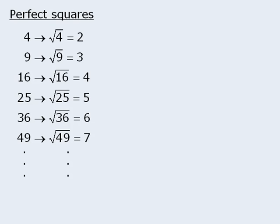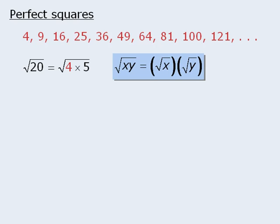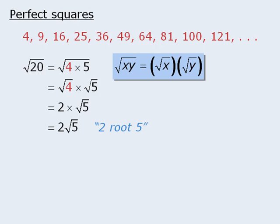Let's take these perfect squares and write them up here. Here's how we can use perfect squares to simplify square roots. Notice that we can take 20 and rewrite it as 4 times 5. The important point here is that we have rewritten 20 as the product of 4, a perfect square, and 5. We can apply the following property to rewrite this root as the product of two roots. The square root of 4 is equal to 2, and the square root of 5 has no integer value, so we leave it as is. So the square root of 20 is equal to 2 times the square root of 5, or 2 root 5.